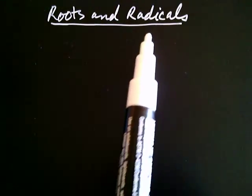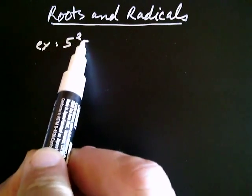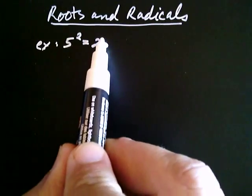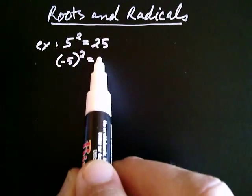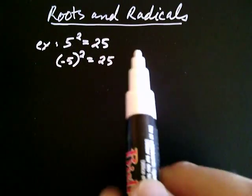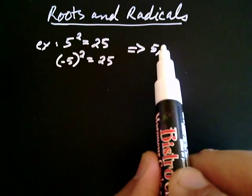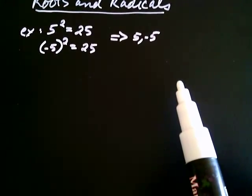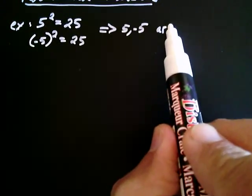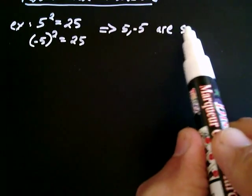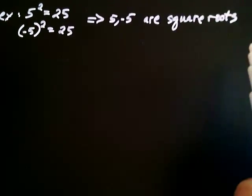Let's talk about roots and radicals. We know, for example, that 5 squared is equal to 25. We also know that negative 5 squared is equal to 25 as well. So for that reason, we say that both 5 and negative 5 are what we call square roots of 25. So 5 and negative 5 are square roots of the number 25.